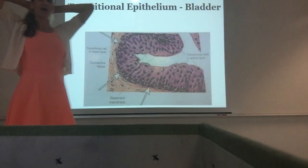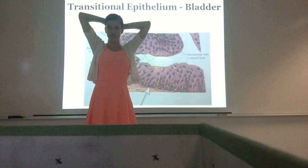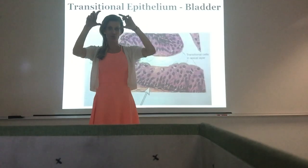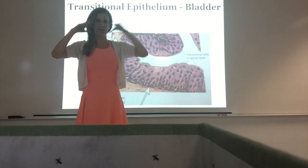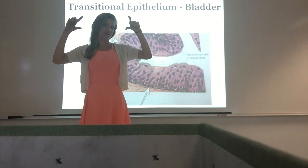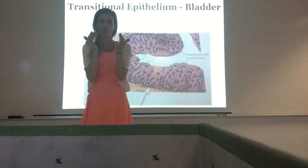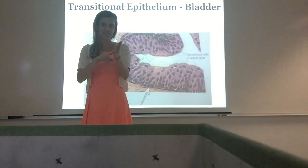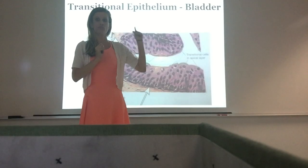Don't confuse transitional with pseudostratified — in pseudostratified, the nuclei are scattered in the bottom two-thirds and don't go all the way to the top; you also see cilia on the surface and no rounded surface cells. The way I recommend learning these: find the ones you'll easily mix up and figure out how to distinguish them. Compare simple columnar vs. pseudostratified columnar; pseudostratified columnar vs. transitional; and keratinized vs. non-keratinized stratified squamous. Test yourself now — put those pictures right next to each other.